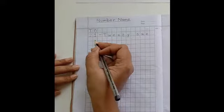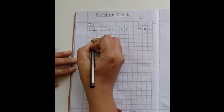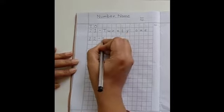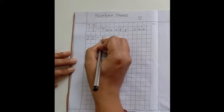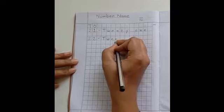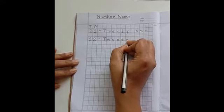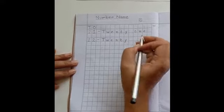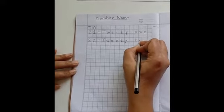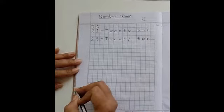After 21, next is 22. T-W-E-N-T-Y, 20, T-W-O, 2. 22.